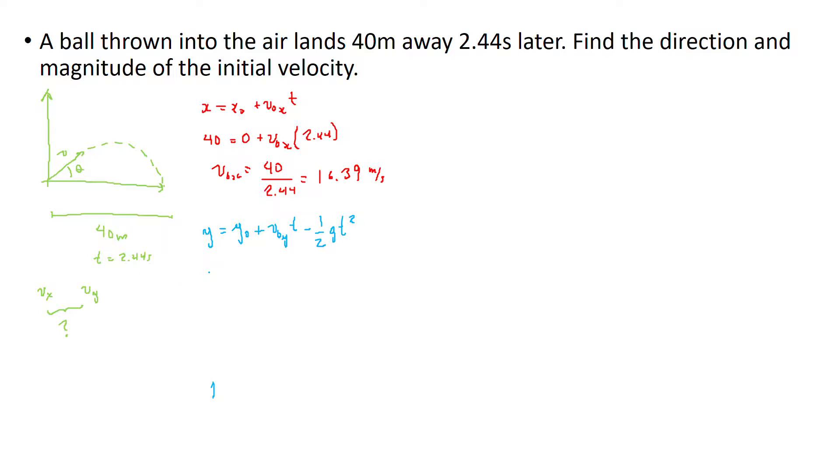We know it fell down, so the final height is exactly the same as the initial one. We don't know the initial velocity in y, the time we know for sure it's 2.44, a half, we know gravity, it's 9.81, and we know time, it's 2.44 squared. So we solve for v0y, and we know that the v0 in y is gonna be a half times 9.81 times 2.44 squared over 2.44, and this is 11.96 meters over second in y.